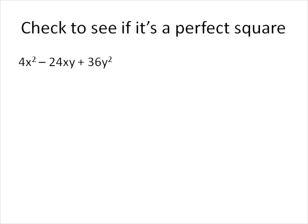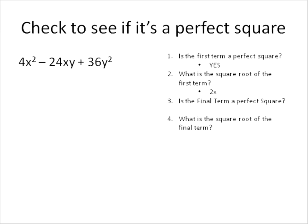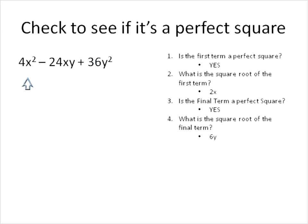Let's do another one. First we're going to check and see if this is a perfect square. The first two questions are about our first term — is it a perfect square, and what is the square root of the first term? 4x² is a perfect square, and the square root of 4x² is 2x. Now moving on to the final term: is 36y² a perfect square? Yes, it is. What's the square root of 36y²? It's 6y.